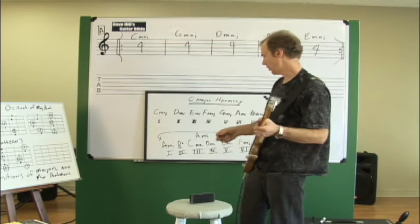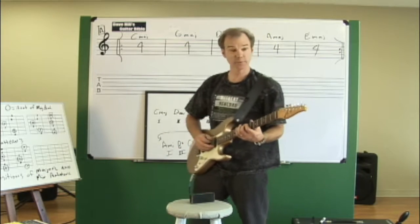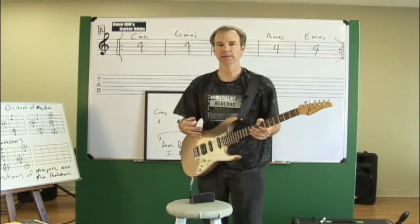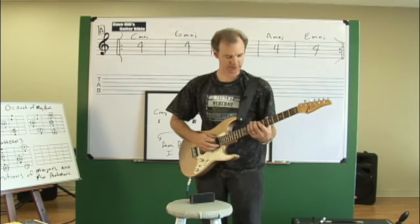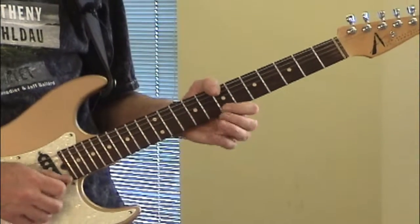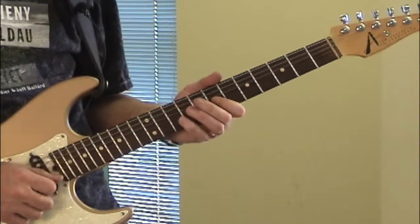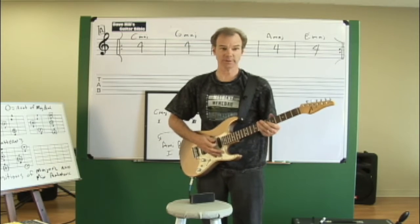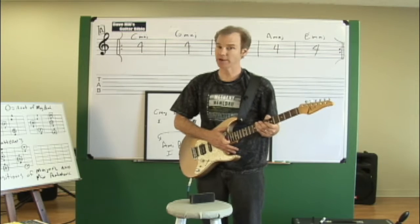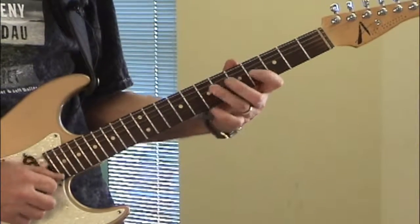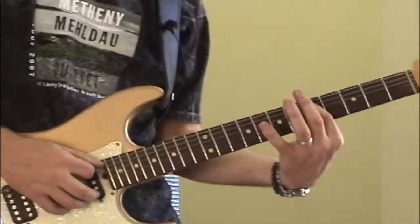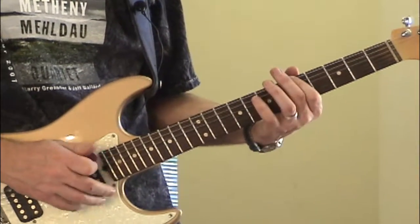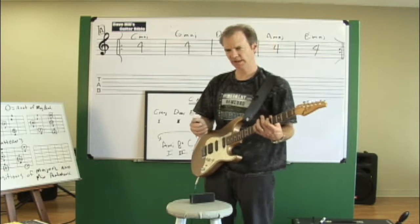I'm showing you today that every one of these major scales is actually also a relative minor. This is C major, but it's also an A minor scale. So when you've learned your major scales, you've actually also learned five minor scales. This is C major right here, but it's also A minor from this tonic.